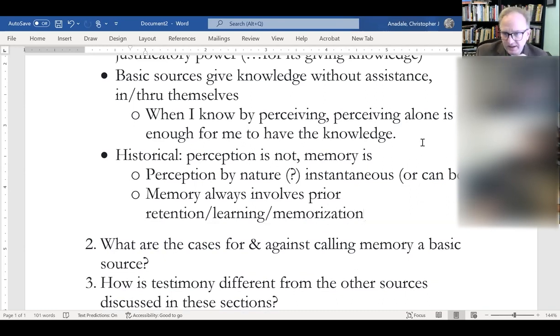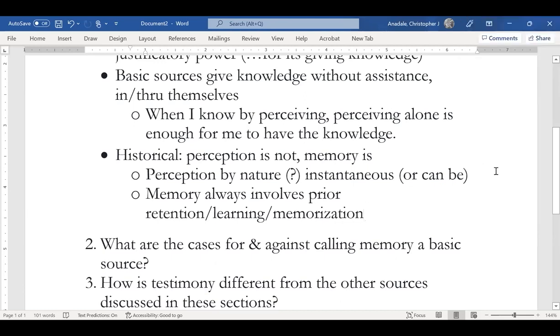Perception is not historical. Memory, it seems, is historical, at least in this sense: one cannot remember something unless one has retained it in memory over some period of time. I think part of what he means here is that perception by its nature is or can be instantaneous. It doesn't seem to require anything beyond itself in order to be perception, in order to be a source of knowledge. Although we perceive in time, the perceptual act itself doesn't seem to be historical, stretched out across time in the way that the memory act is historical. Memory always involves pulling back into my present consciousness something that was previously placed in my mind, whether deliberately or tacitly.